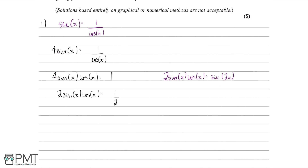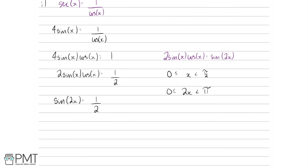Replacing with sin 2x, we're left with sin 2x equals a half. Before we start solving, bear in mind that we now have 2x instead of just x, which means our original range has gone from 0 to π/2 to 2x being between 0 and π.